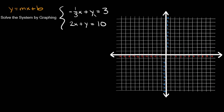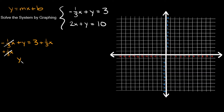Let's do the first equation: negative one-third x plus y equals three. I want to isolate y by itself, so I need to get rid of the negative one-third x by adding one-third x to both sides. These terms cancel out and we're left with y equals one-third x plus three.